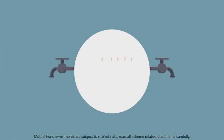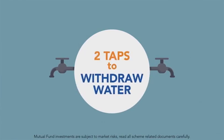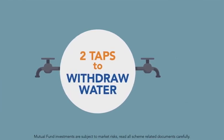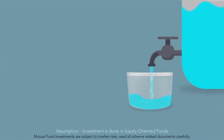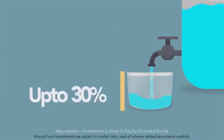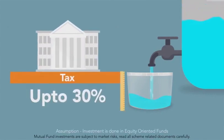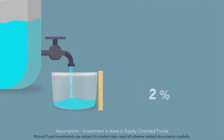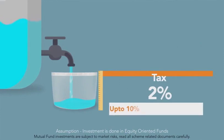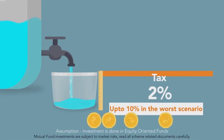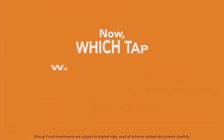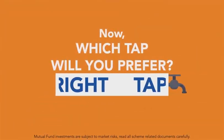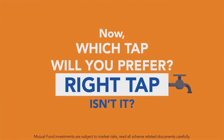There are two taps to withdraw water out of this mutual fund tank. If we withdraw water out of the left tap, you have to pay up to 30% of the water as tax. If we use the right tap, only 1 to 2% tax is to be paid, or up to 10% in the worst case scenario. The right tap will also give you some rebate. So which tap would you prefer? The right tap, isn't it?